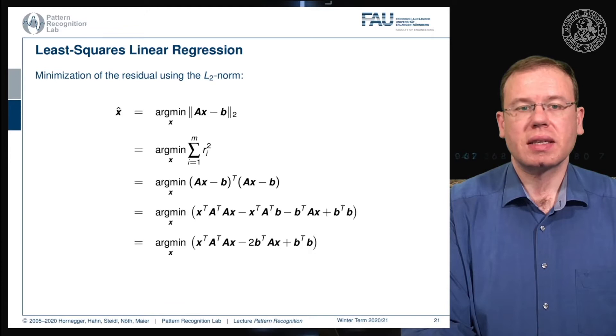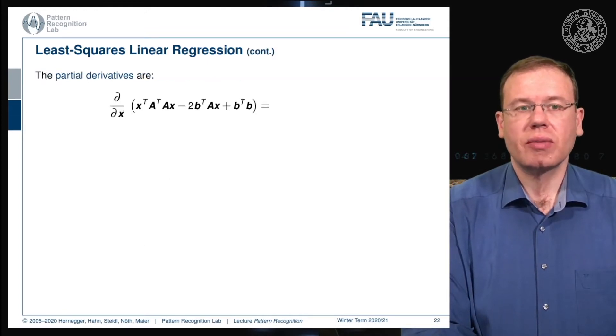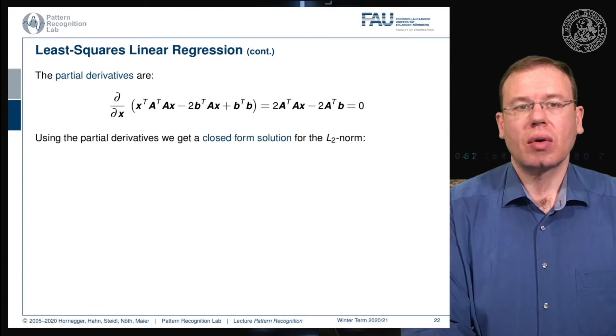For the minimization, we take the partial derivative of this term with respect to x. We can write this up as 2 times A transpose Ax minus 2 times A transpose b equals to 0, and this gives the well-known solution of the pseudo-inverse for x hat.